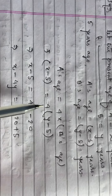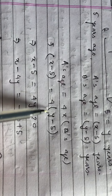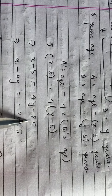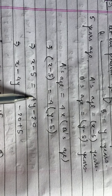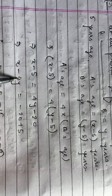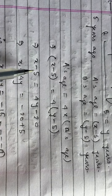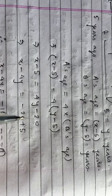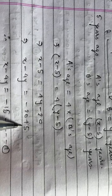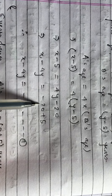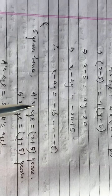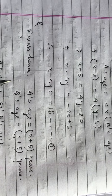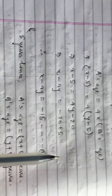So: x minus 5 = 4(y minus 5). Opening the bracket: 4 into y = 4y, and 4 into 5 = 20. So x minus 5 = 4y minus 20. Taking terms to one side: x minus 4y equals minus 20 plus 5, which gives x minus 4y = minus 15. This is the first equation.